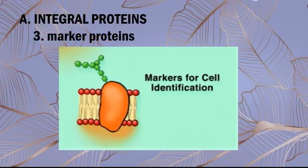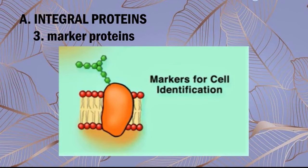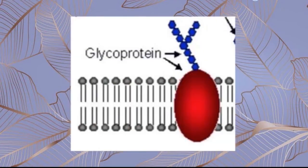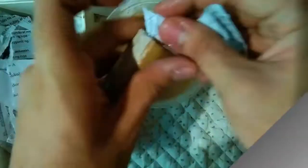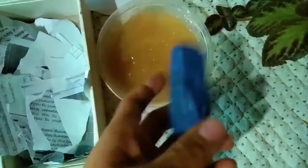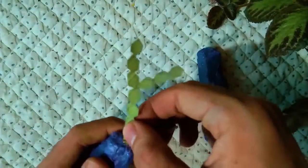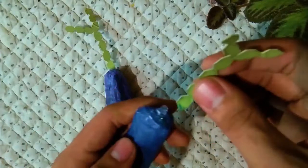Marker proteins allow cells to recognize one another. They have carbohydrates in them and extend across the cell membrane to identify the cell, and are thus also called glycoproteins. The immune system uses these proteins to identify friendly cells from foreign cell invaders. We still need the tube here, and just like the receptor proteins, create its form using scratch papers and paste. Make sure it doesn't have the same shape as the previous proteins and also must not have holes. After painting it, we'll add the carbohydrates on top of it.